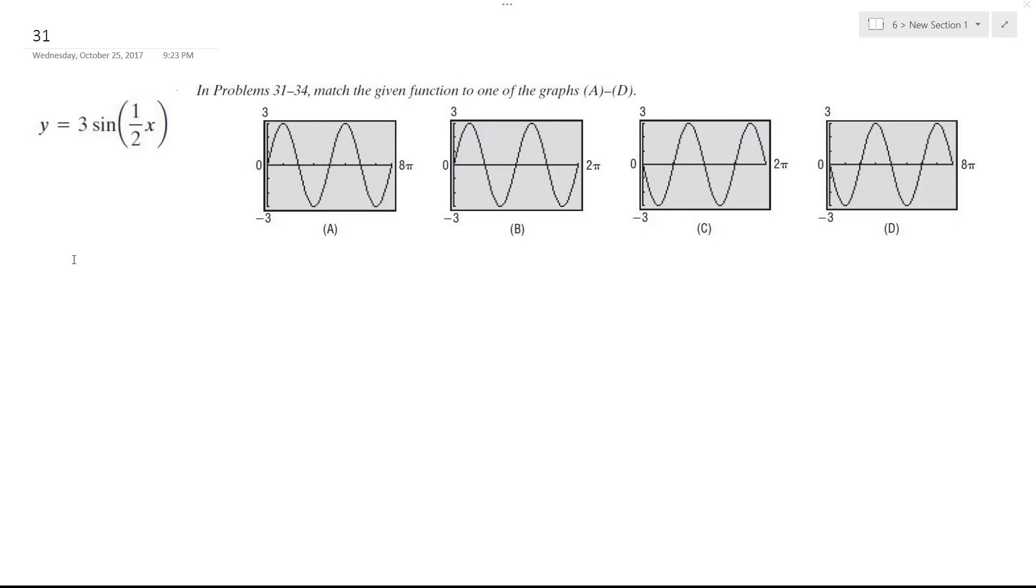So what we have here is a trig function and from these graphs I need to select the correct one. I know it's a sine graph and there's no negative on the outside, so it's going to be a conventional one.